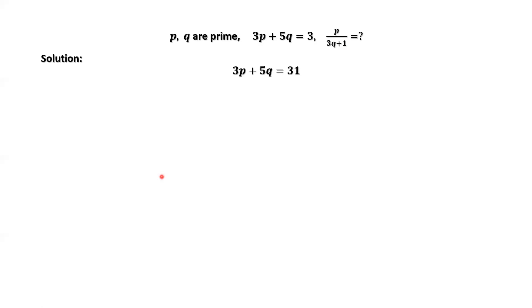This is the given condition. From the right-hand side, we know that 31 is an odd number.